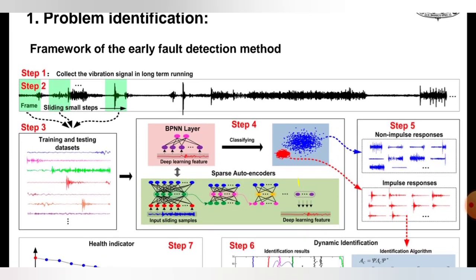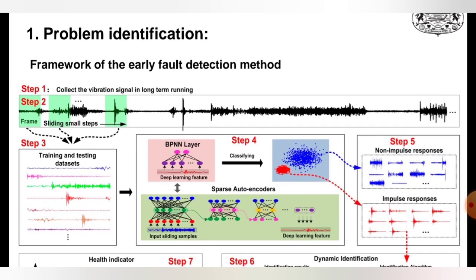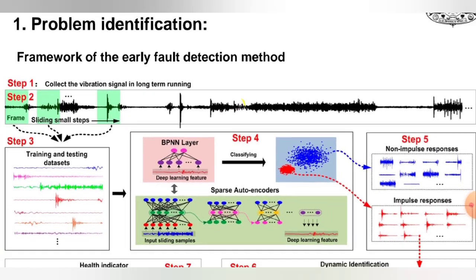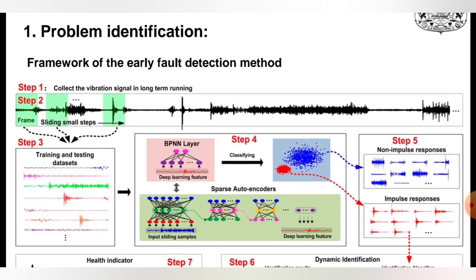Next slide: the framework for the early fault detection method. Suppose there is a gearbox and we would like to identify which gear is going to fail while running. The gearbox can be protected with this early fault detection method using machine learning. Step 1: Collect vibration signals during long-term running for a particular gearbox.